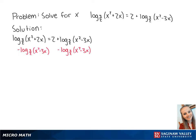So we're going to subtract log base 3 over 2 of x squared minus 3x from both sides to get the log base 3 over 2 of x squared plus 2x minus the log base 3 over 2 of x squared minus 3x equals 2.